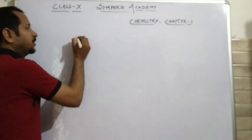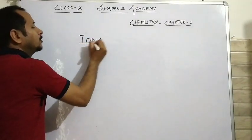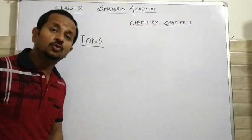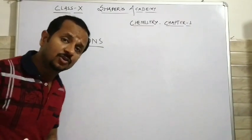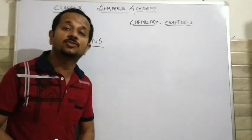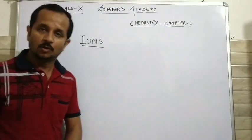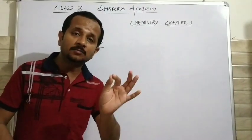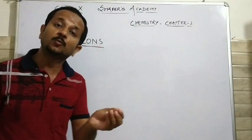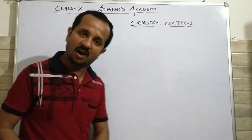Look children, you have studied ions in your standard 9th. Do you know what ions are? The ions are the charged atoms or groups of atoms. Atoms which are charged, or groups of atoms which are having some charge, are called ions.